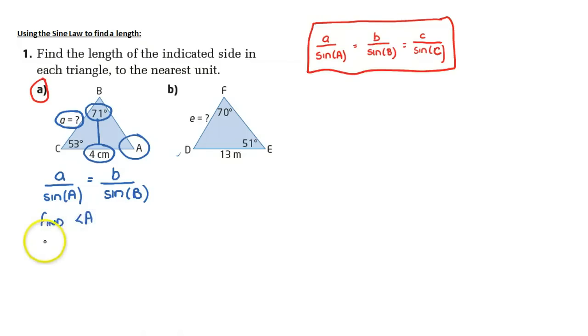We know that there's 180 degrees in a triangle. So therefore, A is equal to 180 minus 71 degrees minus 53 degrees.